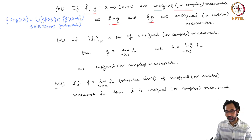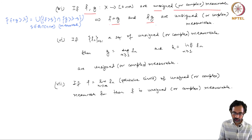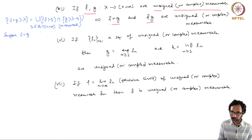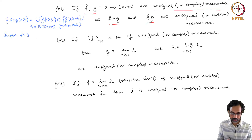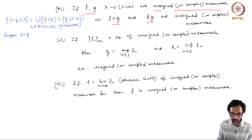For the pointwise product, first suppose that f equals g. If we can prove that f² is measurable — that is, the pointwise product of f with itself is measurable — then we can deduce that fg is measurable.